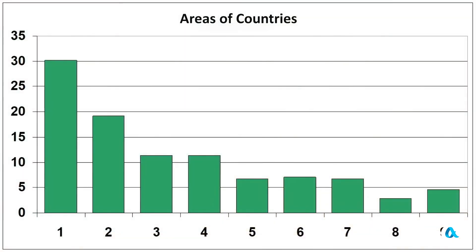With a different data set, everything would look different. Let's take a completely different set instead of population numbers — let's look at the areas of countries and territories. The distribution has changed a bit, but once again 1s account for 30%, and 2s and 3s also make up 30%.